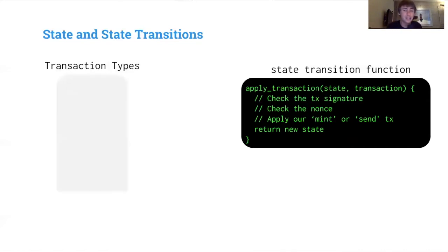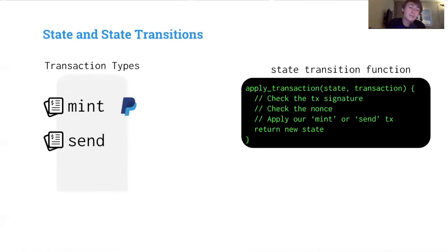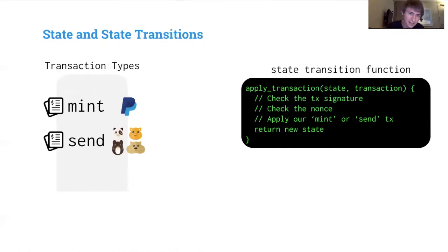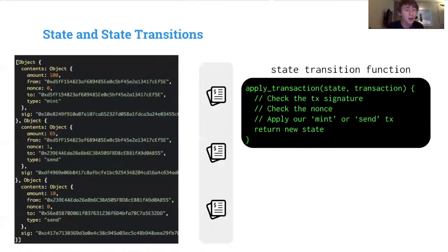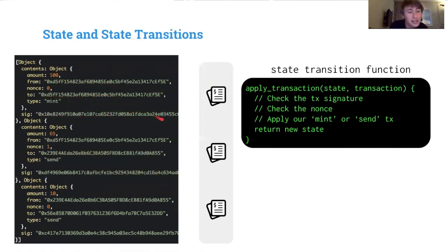There are two transaction types: mint and send. Mint can only be created by our central payment processor — they can create new money at their whim, which is a little scary and why we decentralize. Anyone who controls funds can send. Looking at actual transactions, you'll notice hashes — these are accounts — and these are signatures, so we're already using the cryptographic concepts we've talked about.